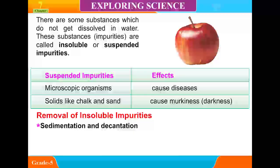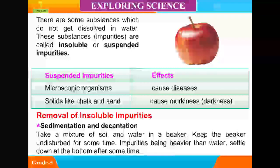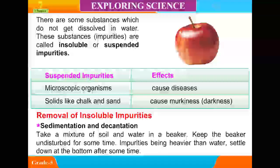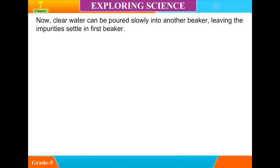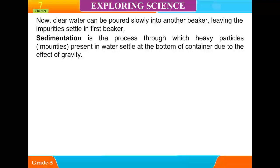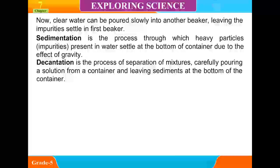Removal of insoluble impurities — Sedimentation and Decantation: Take a mixture of soil and water in a beaker. Keep the beaker undisturbed for some time. Impurities being heavier than water settle down at the bottom. Clear water can then be poured slowly into another beaker, leaving the impurities in the first beaker. Sedimentation is the process through which heavy particles present in the water settle at the bottom due to gravity. Decantation is the process of separating a mixture by pouring the solution from a container, leaving sediments at the bottom.